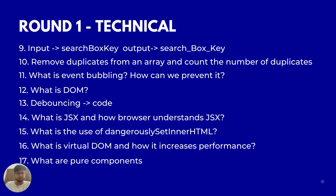The twelfth question was: what is the DOM and how can you manipulate it? The thirteenth question was again a coding question — the first interviewer asked me to explain the difference between throttling and debouncing, and then explicitly write code to debounce a function, such as a search keyword function, where the function runs after every five seconds. I had practiced debouncing and throttling so I knew how to implement it.